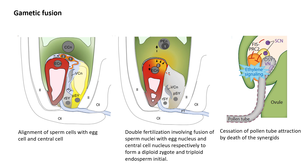Each ovule usually receives only one pollen tube and there are mechanisms that ensure polyspermy does not occur. If gametic fusion is successful, the pollen tube attraction by the synergid ceases because the second synergid, called the persistent synergid, undergoes cell death and can no longer produce the lure proteins to attract a second pollen tube. The synergid cell death is mediated through ethylene signaling in response to the fertilization of the egg. Similarly, the fertilized central cell signals successful fusion through the fertilization-independent seed polycomb repressor complex or FIS-PRC2 proteins. However, if double fertilization is not completed, the persistent synergid is able to receive another pollen tube to complete gametic fusion with the unfertilized egg or central cell. This is called fertilization recovery.